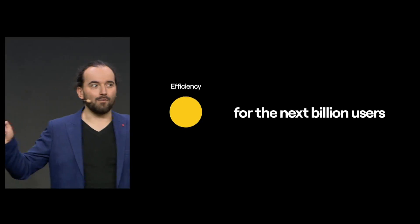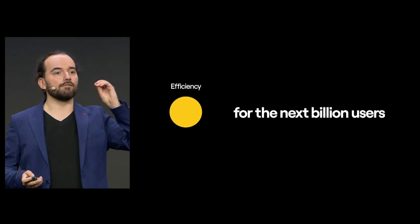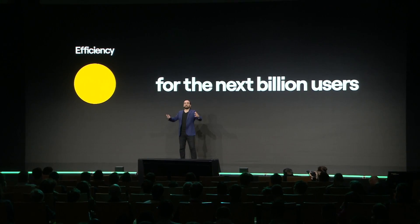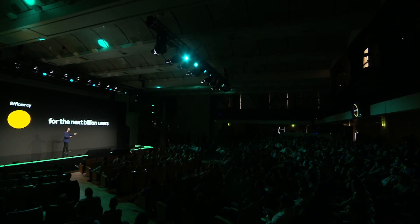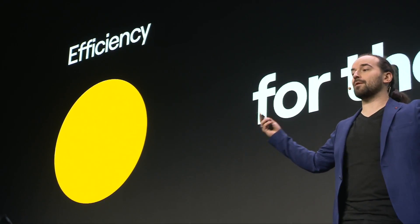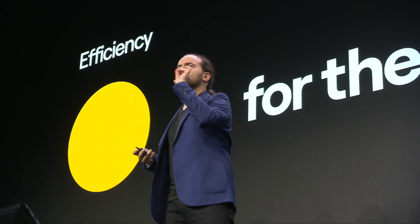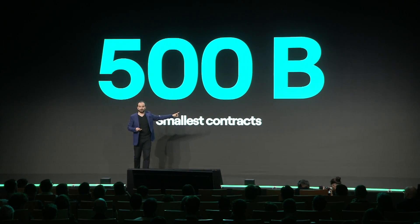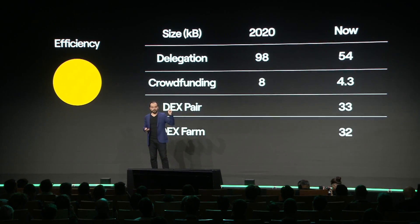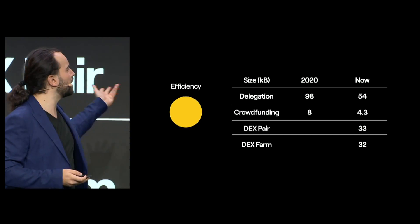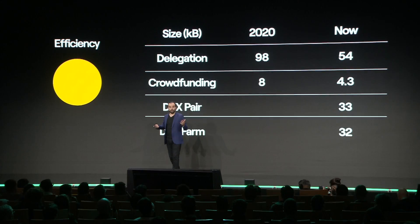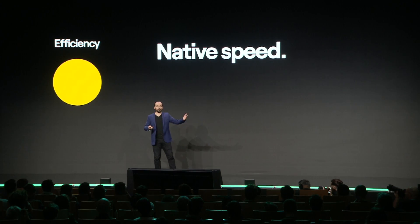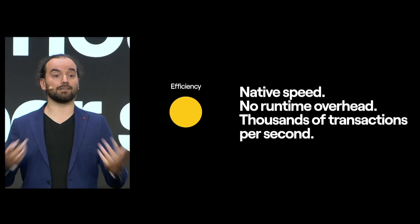What does efficiency mean in language? It means you can convey your ideas very well. In smart contracts, it means they can be run by a billion users. We really are building for the next billion users. A billion users means at least a billion storage accounts and hundreds of billions of transactions — so every byte matters. Every little optimization adds up to a massive scale. We care a lot about our contracts being small and precise. We have contracts as small as 500 bytes. We have contracts we started two years ago that we've reduced to half their size. New contracts rarely exceed 30 kilobytes, even though they are very complex. Our contracts run at native speed — there's no runtime overhead — and this allows us to achieve thousands of transactions per second.